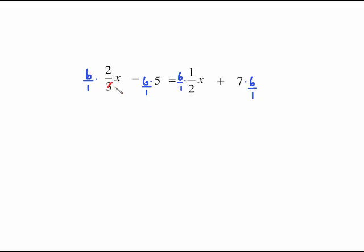I can cancel now. I can do 3 into 3 once, 3 into 6 twice, 2 times 2x gives me 4x right here. Go to the next one. This is just plain old 6 times 5 which is 30. Equals canceling. 2 goes into 6 3 times. 3 times 1 is 3x and then 7 times 6 is 42.